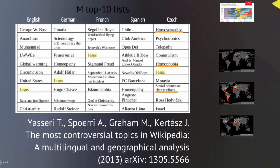Looking at different languages — like German and French — you can see some similarities. Jesus has been controversial in almost all languages. But there are also local features: in Spanish Wikipedia, there are a lot of debates on football clubs and sport — which is kind of religion in that language too. In Czech Wikipedia, for example, a lot of controversial articles are about sex and gender issues, which is also a kind of local feature.